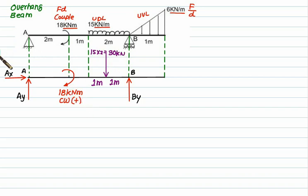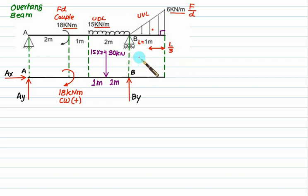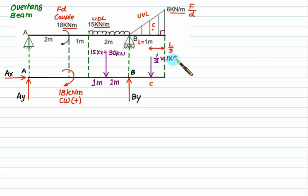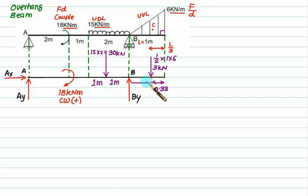For the UVL load, always locate the 90-degree end first, then mark the centroid at a distance of L by 3 from that 90-degree end. The equivalent point load equals zero point five times base times height: that is 1 by 2 into 1 into 6, which equals 3 kilonewton. The distance L by 3 equals 1 by 3, which is 0.33 meters. The total span is 1 meter, so the remaining distance from point C to B is 1 minus 0.33 equal to 0.67 meters.